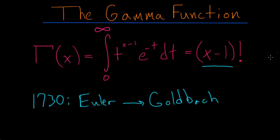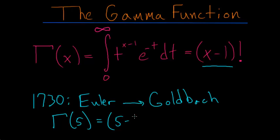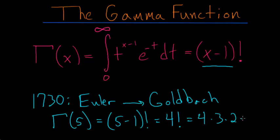For instance, if I evaluate gamma when x is equal to 5, this is equal to 5 minus 1 factorial — in other words, it's equal to 4 factorial, which is just 4 times 3 times 2 times 1. And it's out of the gamma function that we find some really surprising results, namely that 0 factorial is equal to the value 1.